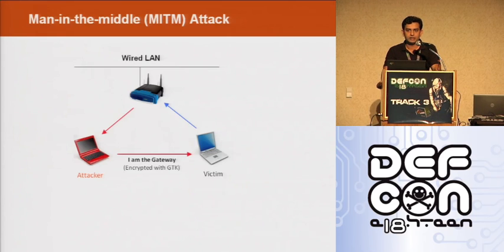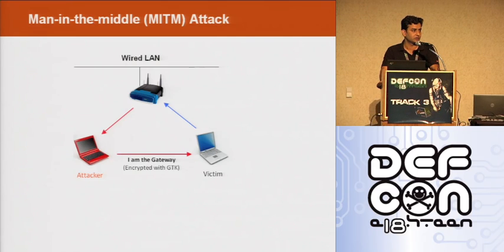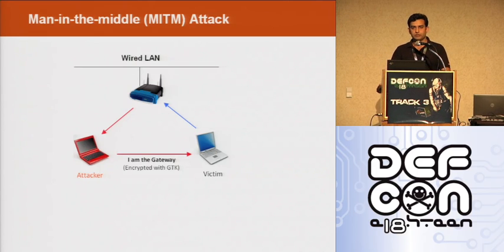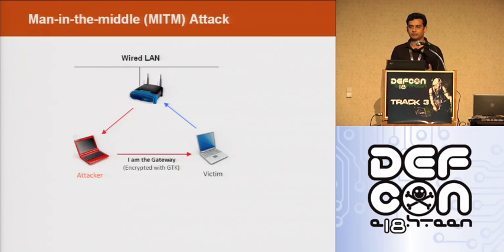At this point, the attacker can drop all packets and perform a denial-of-service attack. But if he wants to steal information, he has to provide a seamless, transparent service to the user — the user should not feel that something is wrong in the network. For example, if I'm accessing Yahoo and I'm not able to access it, it means there is something wrong. So the attacker is going to forward all packets to the actual server or gateway, and he becomes man-in-the-middle.